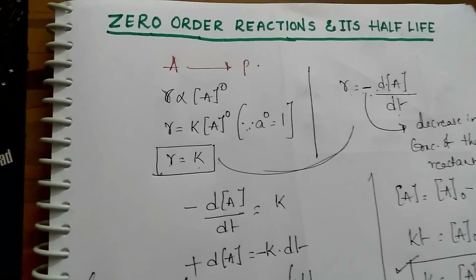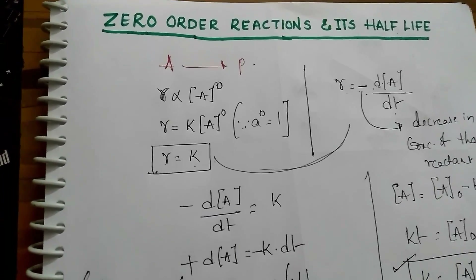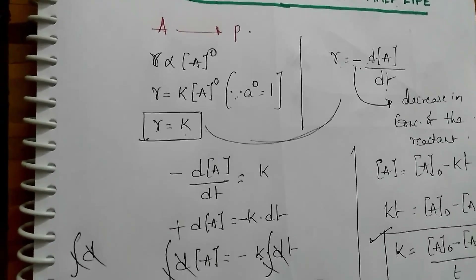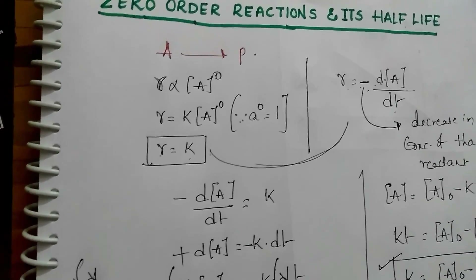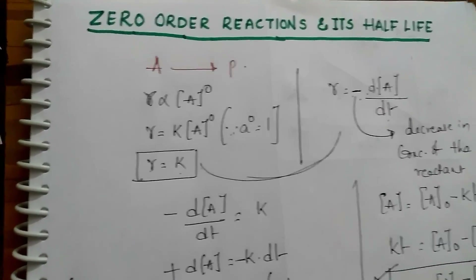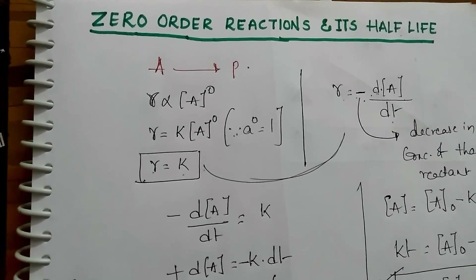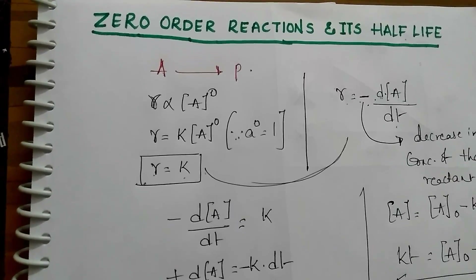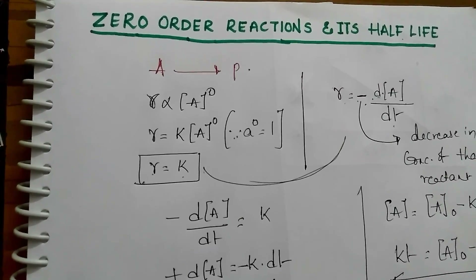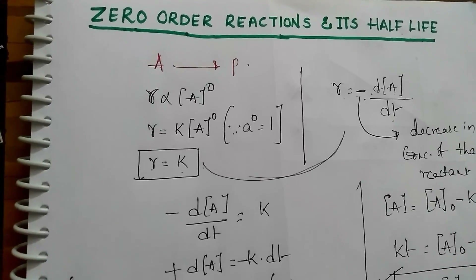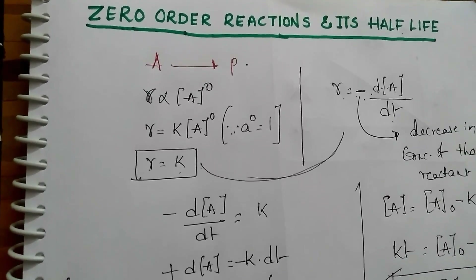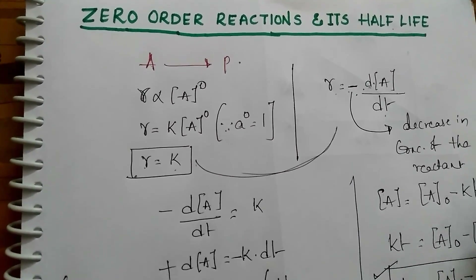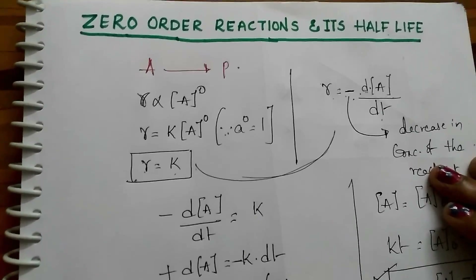Zero-order reactions generally take place in a heterogeneous system and in some photochemical reactions. They are less common. Examples include the thermal decomposition of certain gases like ammonia on a catalyst surface, enzyme-catalyzed reactions, and photochemical reactions. Thanks for watching. I'll see you in the next video.